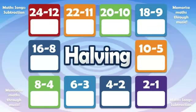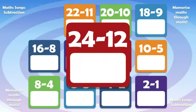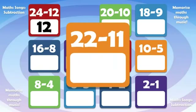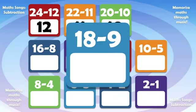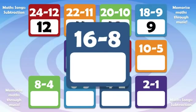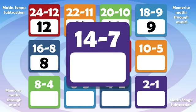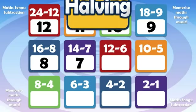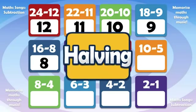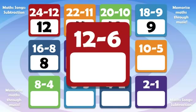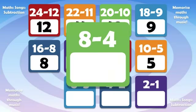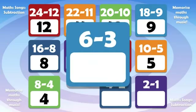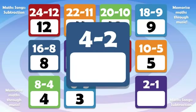Here we go, let's have some numbers. 24 minus 12 is 12, 22 minus 11 is 11, 20 minus 10 is 10, 18 minus 9 is 9, 16 minus 8 is 8, 14 minus 7 is 7, 12 minus 6 is 6, 10 minus 5 is 5, 8 minus 4 is 4, 6 minus 3 is 3, 4 minus 2 is 2.